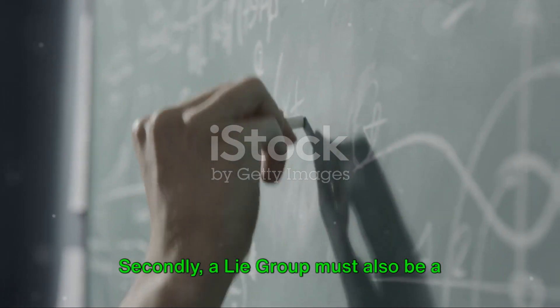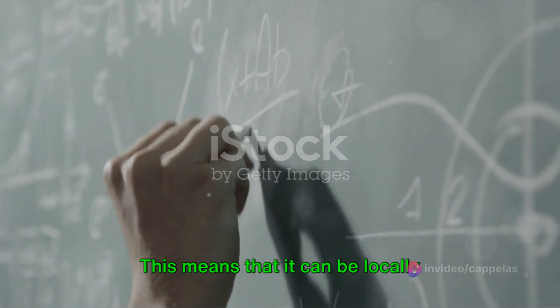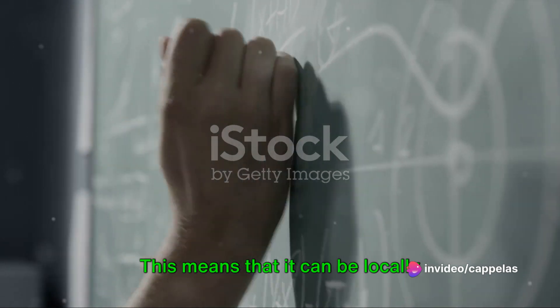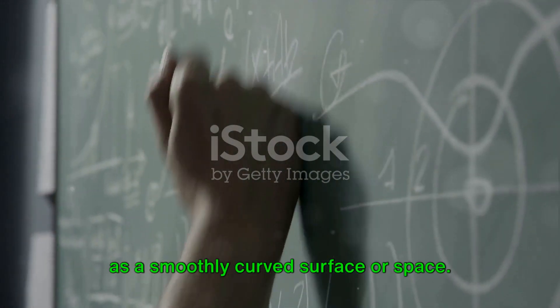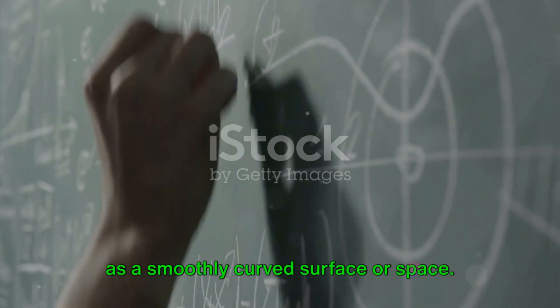Secondly, a Lie group must also be a differentiable manifold. This means that it can be locally approximated by Euclidean spaces, which allows for smooth transitions between group elements and visual representation as a smoothly curved surface or space.